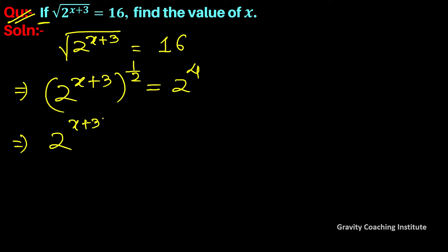(x+3) × 1/2. After multiplying, we get 2^((x+3)/2) = 2^4. Now we'll compare both sides - the bases are identical.